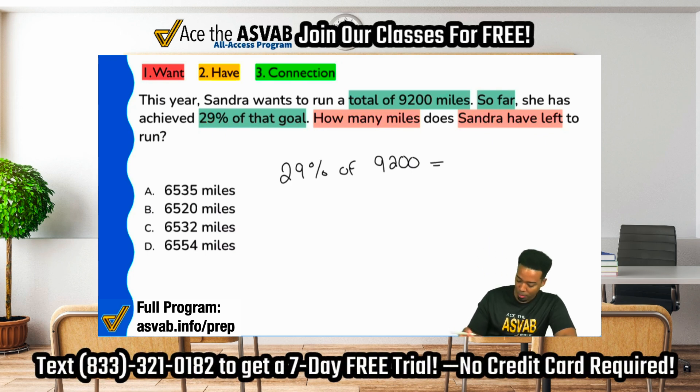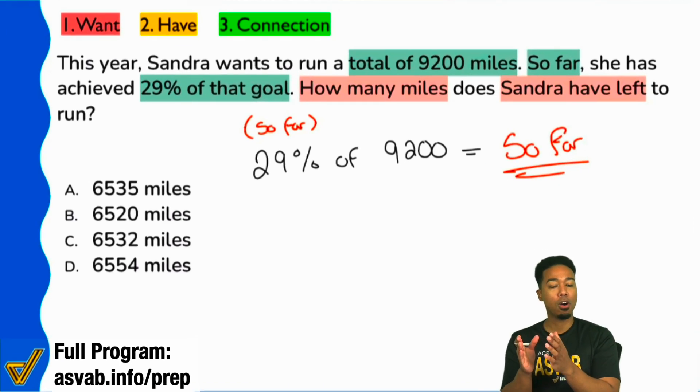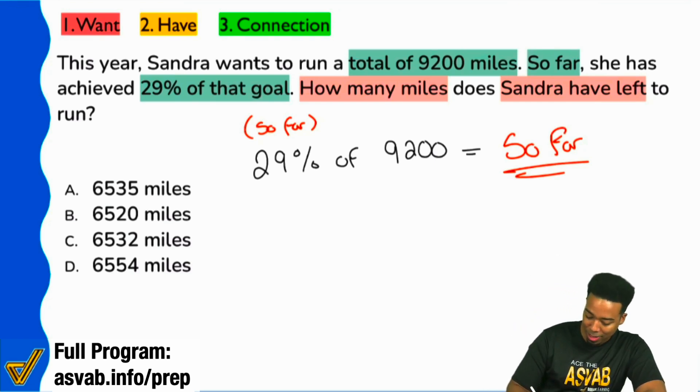And so therefore, so far, 29% is what we have for the percentage. And so what this will give us is what we've achieved so far. That's not going to give you the answer. What you have so far to get what you have left, you're going to have to subtract. So let's do the math here.